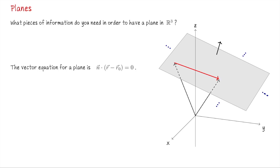So first, what pieces of information do you need to have in order to specify a plane in R3? I predict that the first reaction you have to that question would be three non-colinear points. What I mean by non-colinear is that the three points don't all lay on one line, so in particular they form a triangle between them. If you hold up three fingers and imagine the fingertips as three points in space, you'll realize that no matter how you configure your fingers, as long as they're forming a triangle, there's exactly one plane that they determine.